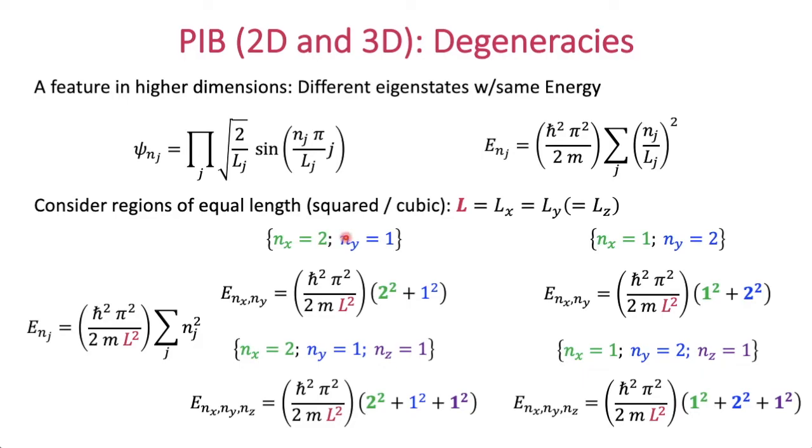Consider for example a square or a cubic box depending if you're in two dimensions or three dimensions, but basically the dimensions or the length on each of the sides are equal to one another.